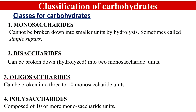Now let's look at the different classes of carbohydrates. Carbohydrates have been classified into different categories. Some books cover only three of these, but we will cover all four. The first class is monosaccharides, the second is disaccharides, the third is oligosaccharides, and the fourth is polysaccharides.